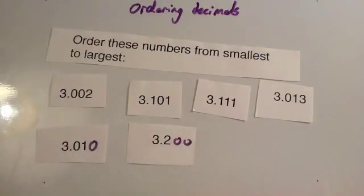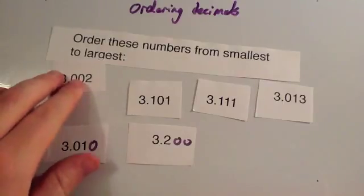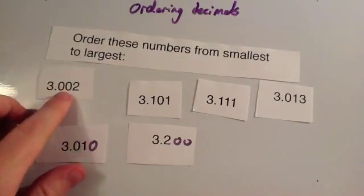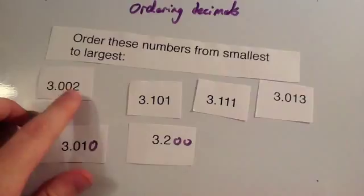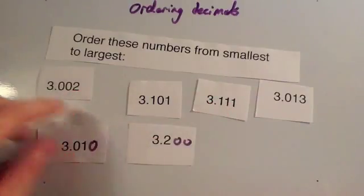So to find the smallest one, look and see which one has got the smallest number after the decimal point. Well, that's going to be this one. This one's clearly the smallest. You can see that it's got 0, 0, 2, 0, 1, 0. Okay.